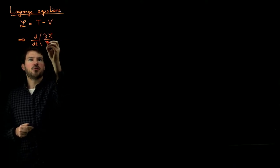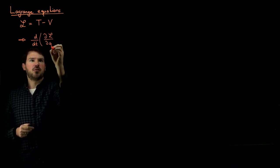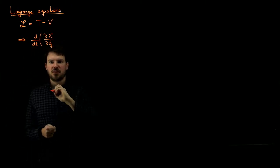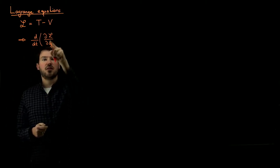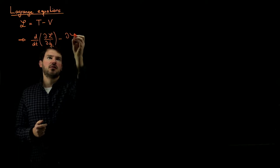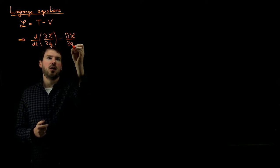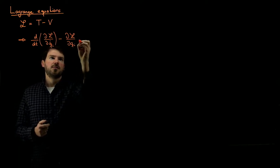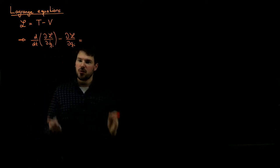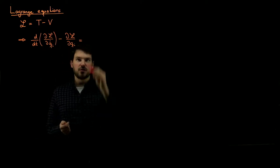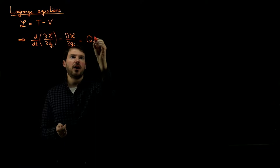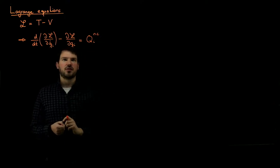the Lagrangian differentiated with respect to qi dot — these are generalized degrees of freedom — minus dL by dqi. This equals zero if it's a conservative system. If there are non-conservative forces, then we had to add the term Q_i non-conservative.